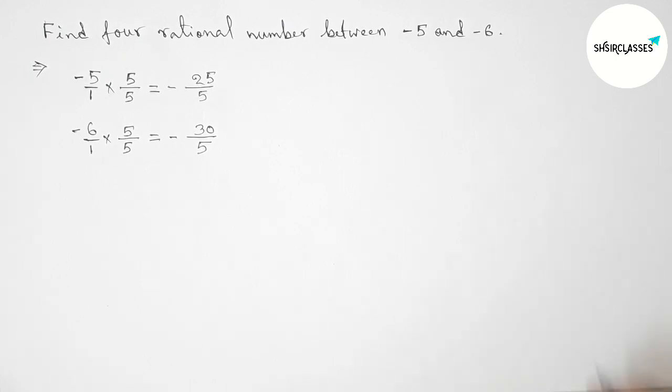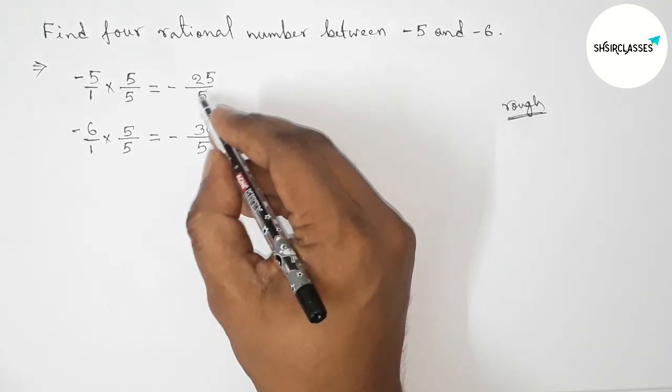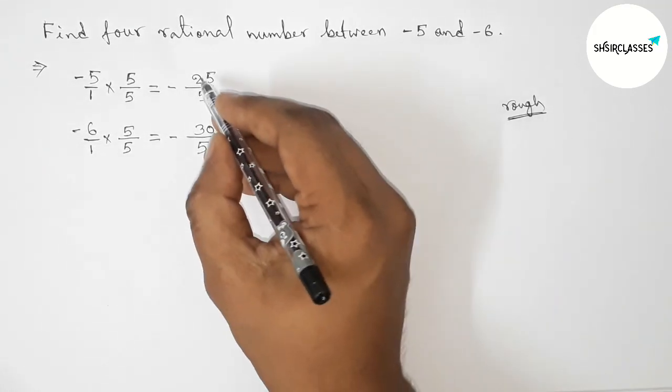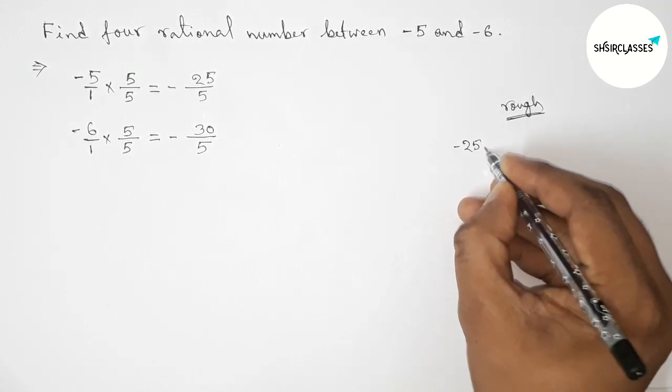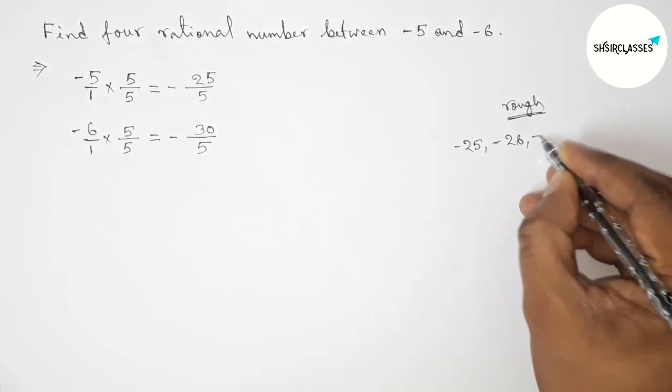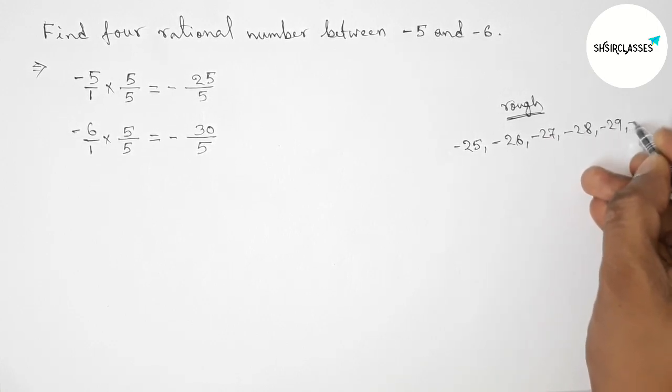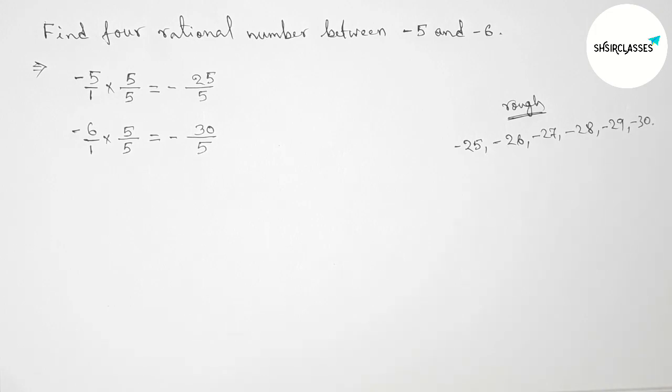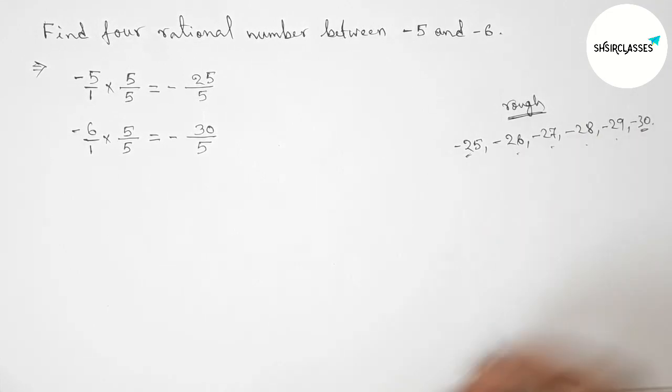So now roughly discussing here some important calculation. So here both the denominators are same, so now between minus 25 to minus 30 we can get four negative integers. Okay, so here between this and this, these are four negative integers.